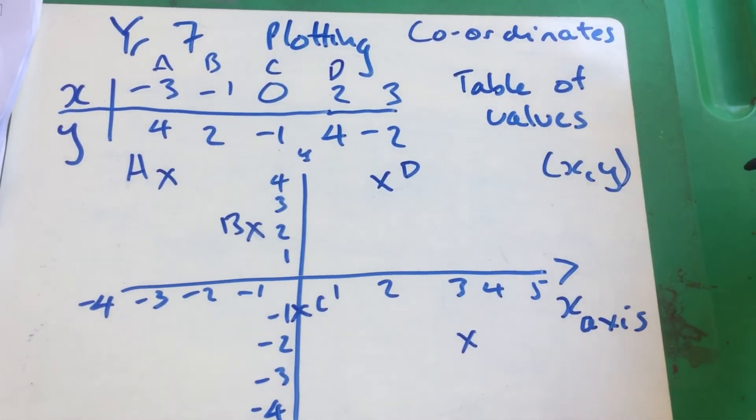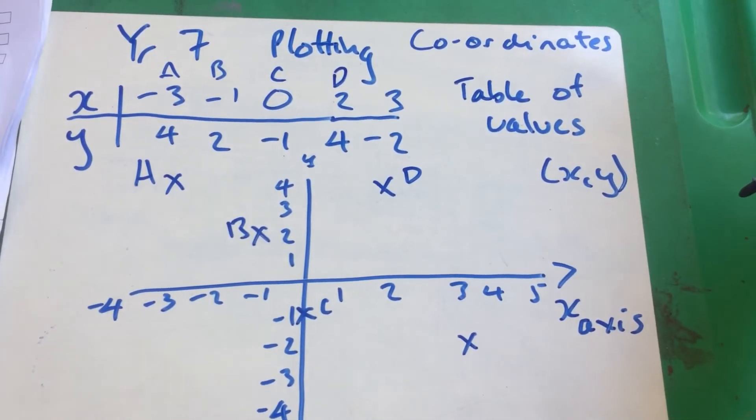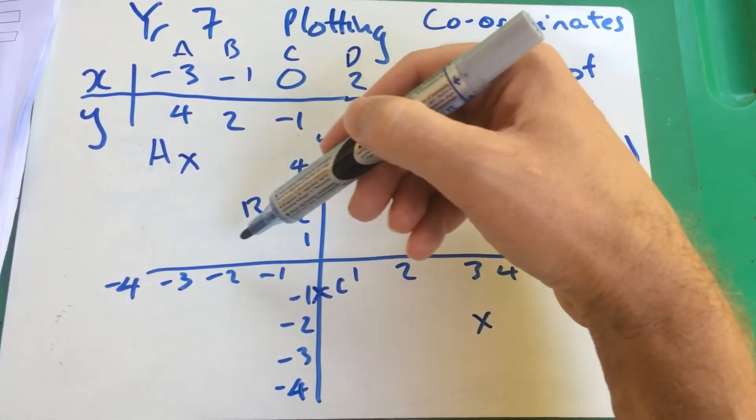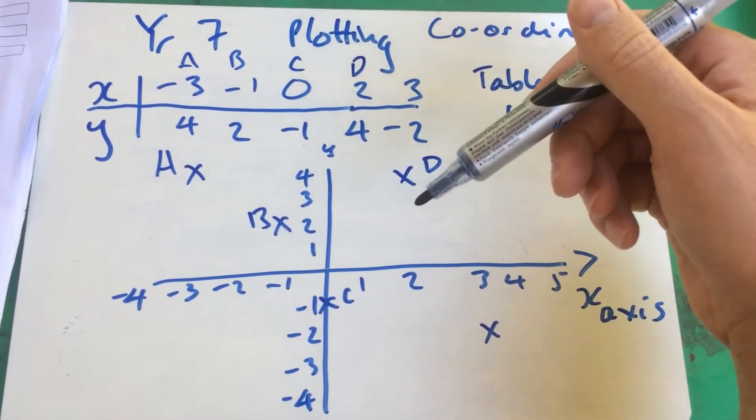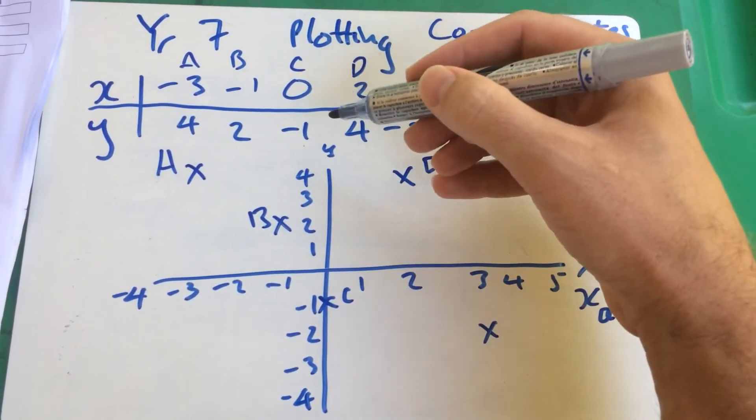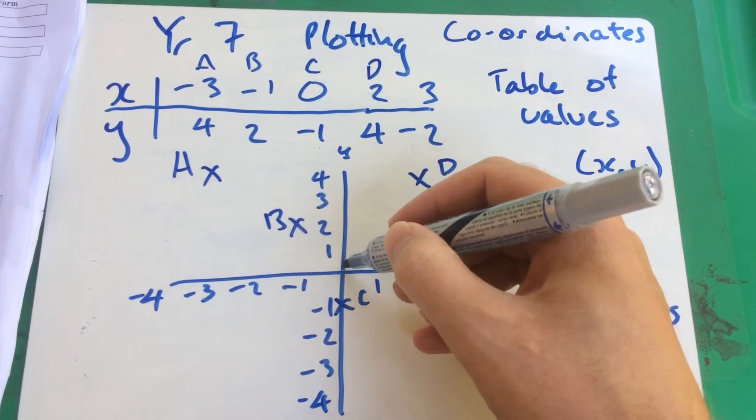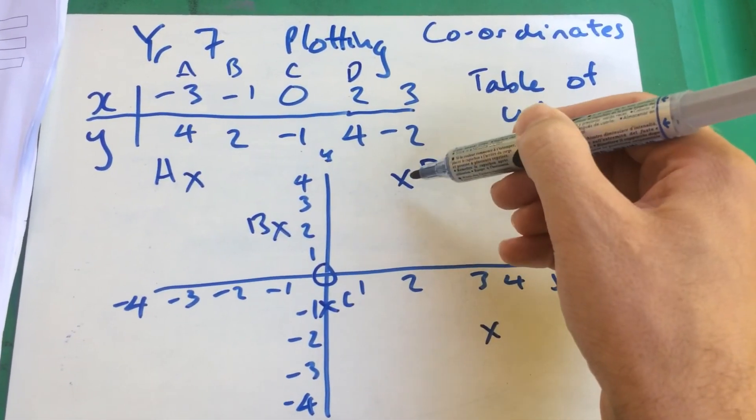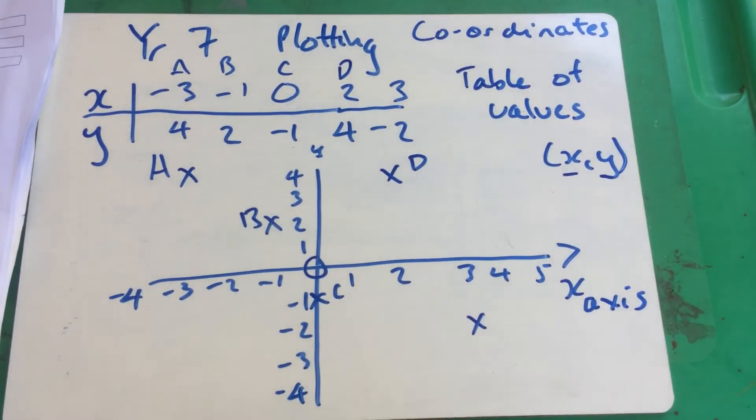That's just a quick demonstration of how to plot coordinates using a table of values and always taking it to x, y. So minus 3, 4, minus 3, 4. And then minus 1, 2, minus 1, 2. 0, minus 1, 0, which is the center, minus 1, 2 and 4, and 3 and minus 2. So, thanks for watching.